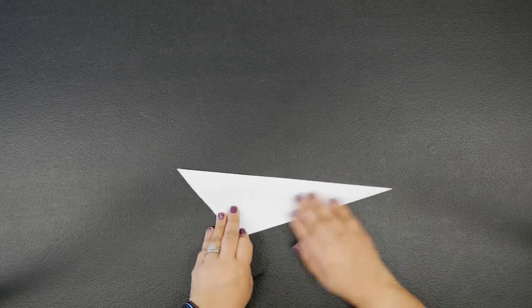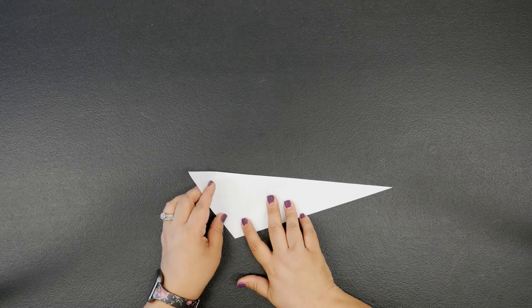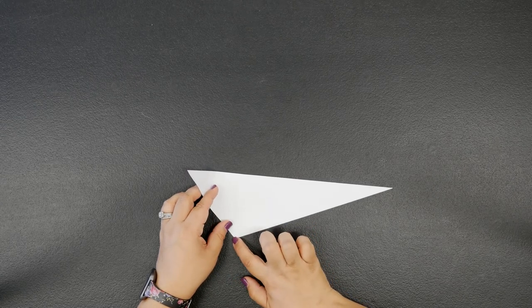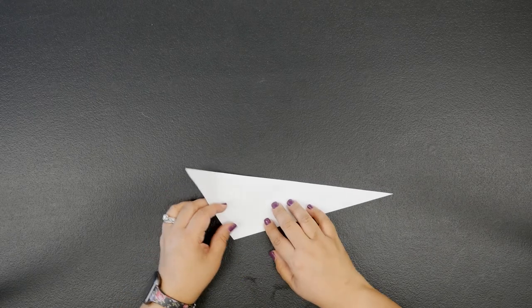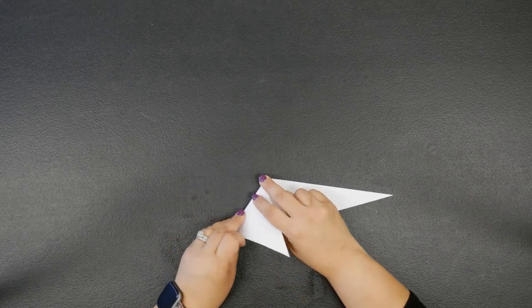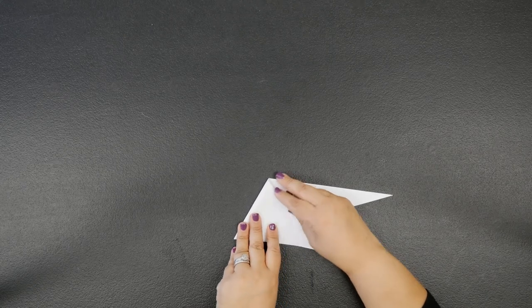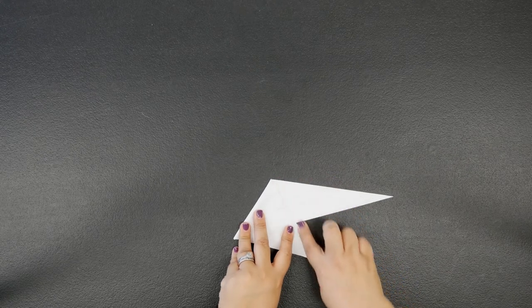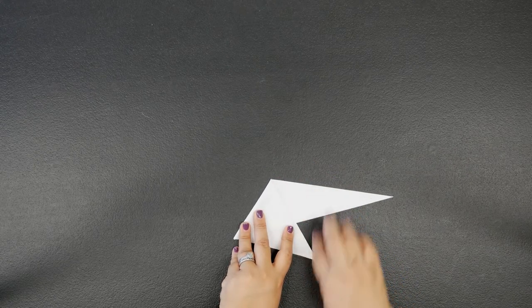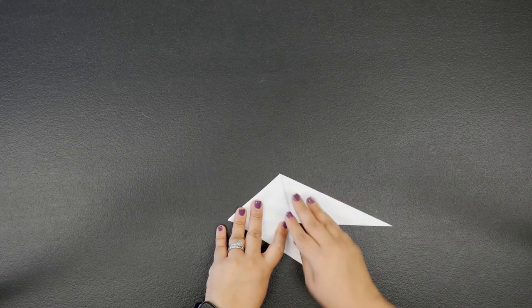Our next step: we're going to bring this left corner down, and this little corner down here will be your guide to let you know how far to fold in, so you're going to end up with just about almost a straight line here. See how this is just a little bit slanted.